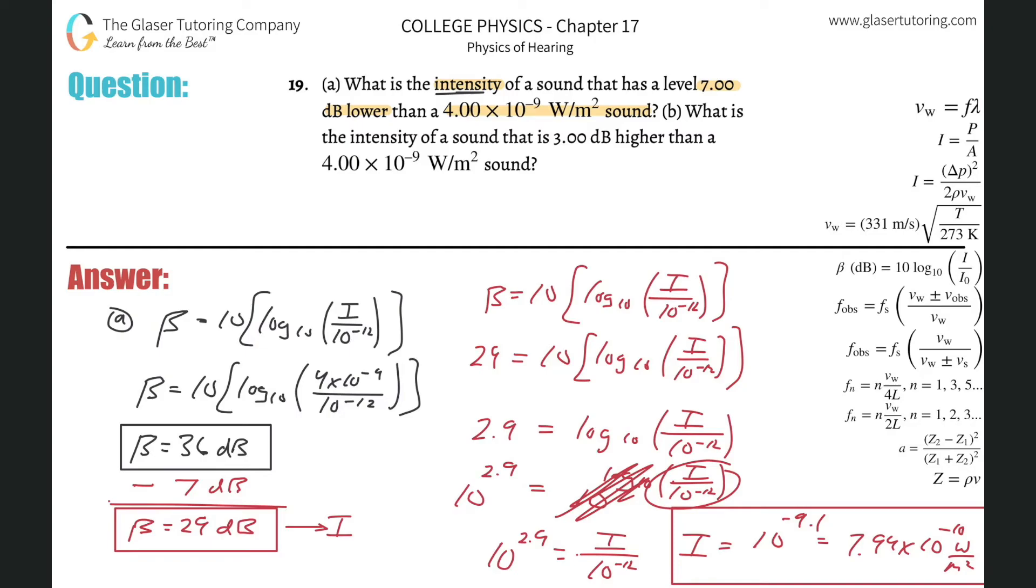So now it says, what is the intensity of a sound that is three decibels higher than the four times 10 to the minus ninth sound? So basically now, this is the original decibel value of the four times 10 to the minus ninth sound, but instead of subtracting seven, now I want to add three. So basically I'm not going to go through the whole calculation again. I'm going to just do it quickly, my hand is about to fall off.